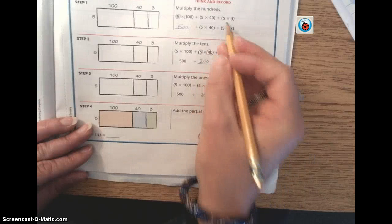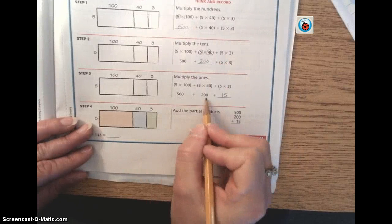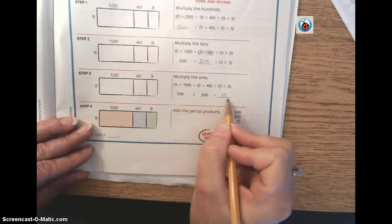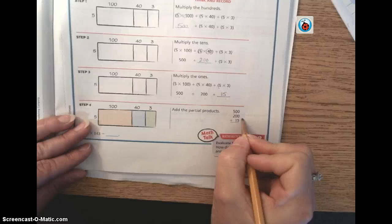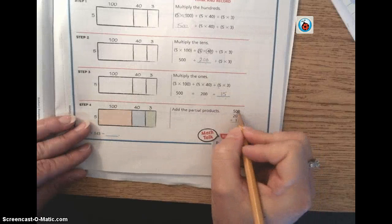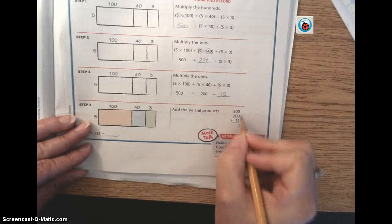So going back from the beginning, we have 500 plus 200 plus 15. We're going to add it up, just like we did in the distributive form, and we will get 5, 1, 7.